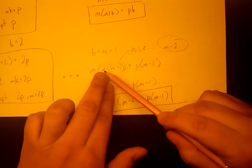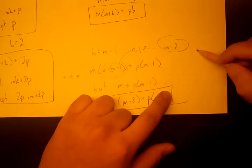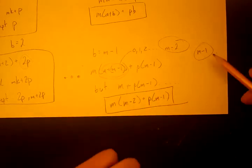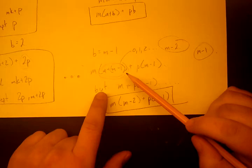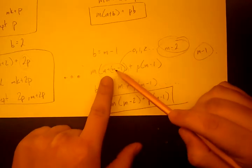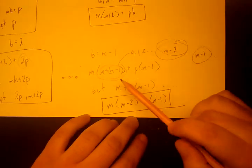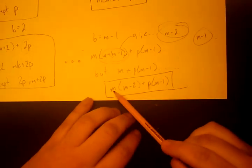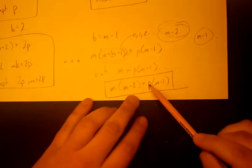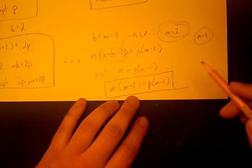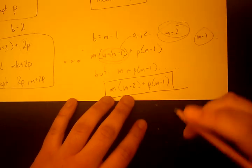Because if it is m minus two, then a would have to be negative one, and it can't be negative one. So if a is zero, then it can be m minus one. That is possible, and it can be any value after that. So that means that when we put m minus two in here, we're going to get the largest value. We're going to get a Frobenius number. So when we put m minus two in here, we got m(m - 2) + p(m - 1).